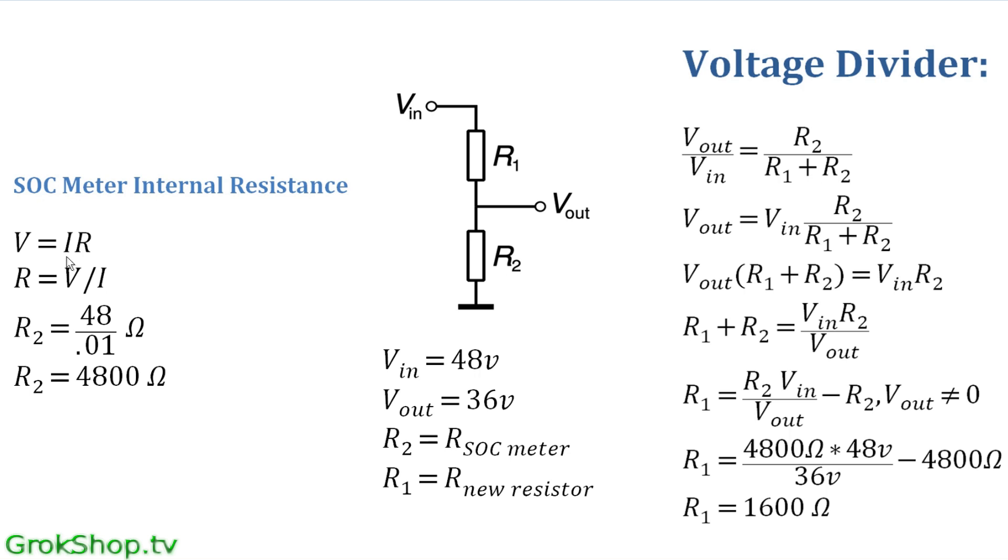If you looked at that first part of the video before this slide, you'll see it came out to be 0.01 amps, which is the same as 10 milliamps. So we divide the applied voltage by the current and we get the internal resistance: 4800 ohms.